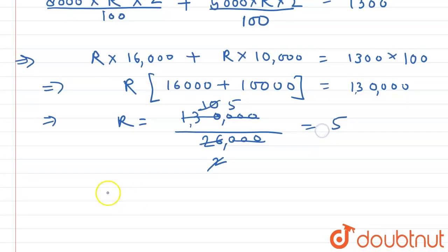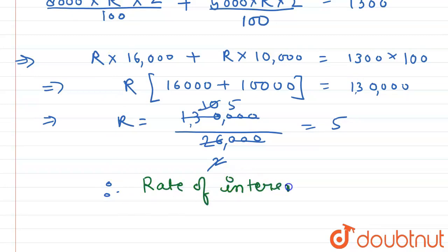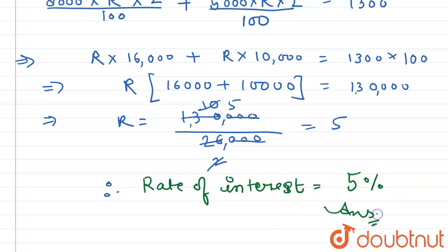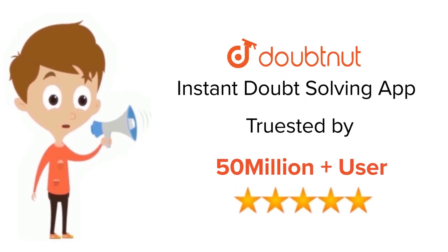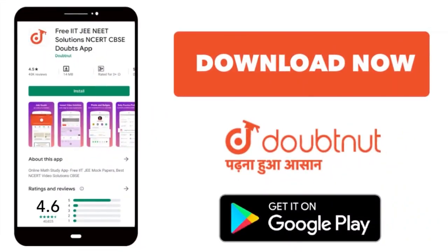Therefore, the rate of interest is equal to 5%. This is the answer. Thank you. For class 6 to 12, IIT JEE and NEET level, trusted by more than 5 crore students — download DoubtNut today.